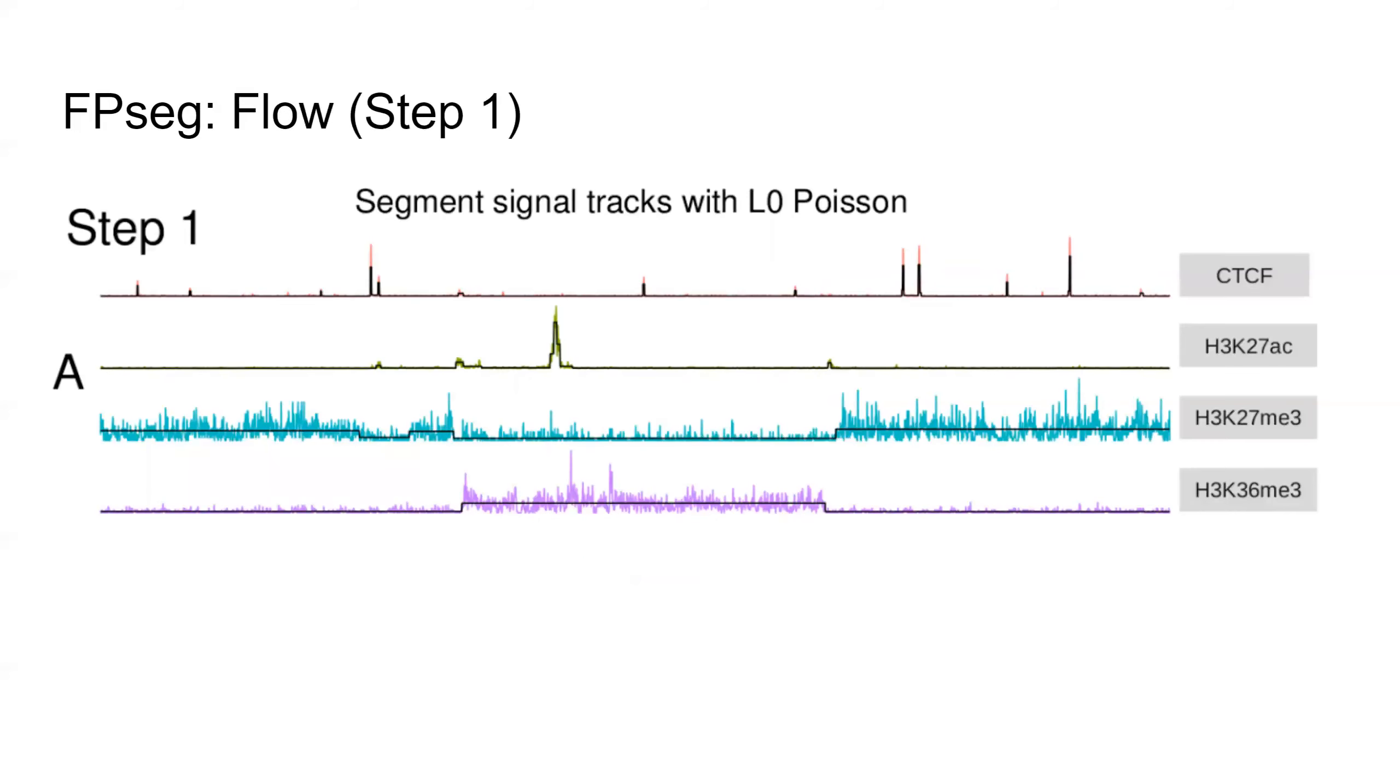Now I will be going through the flow of our algorithm. The first step is to segment each track with Poisson L0 segmentation. The black lines are the L0 approximation of the tracks, and it works with raw count data directly. And it is really fast; except for some pathological cases, it runs in linear time.